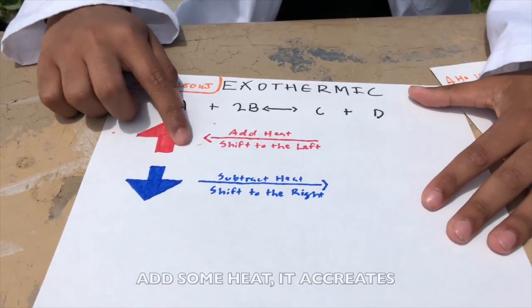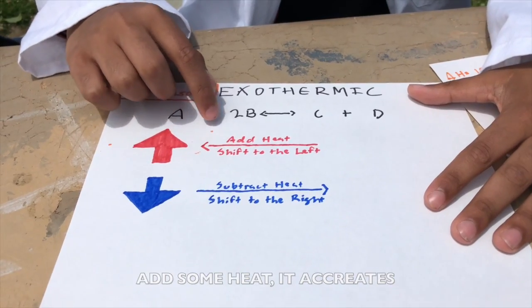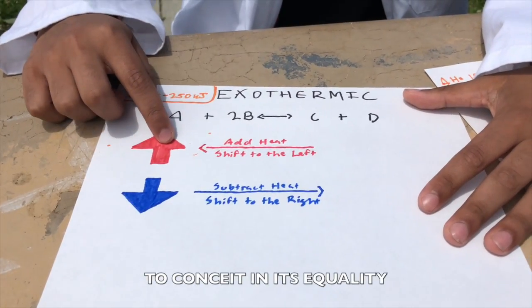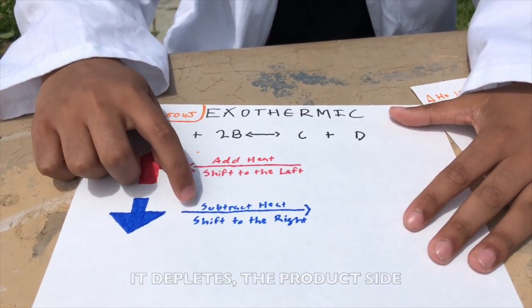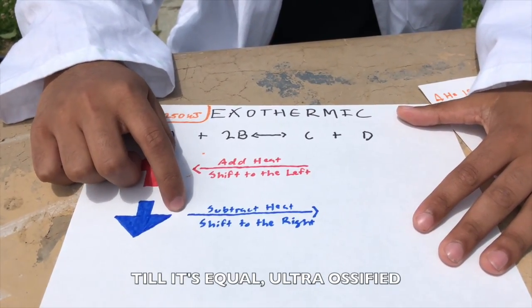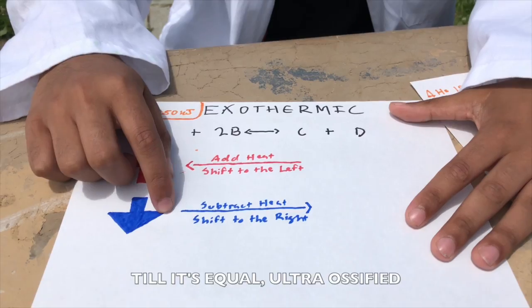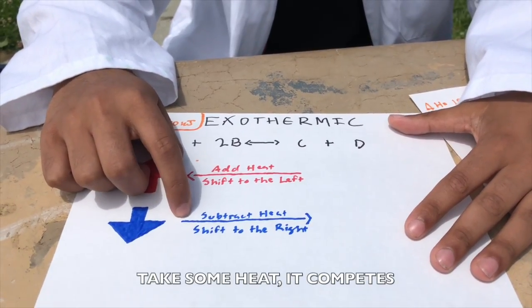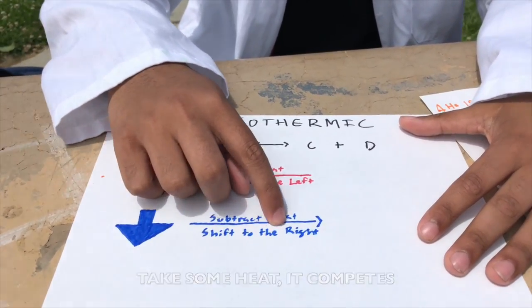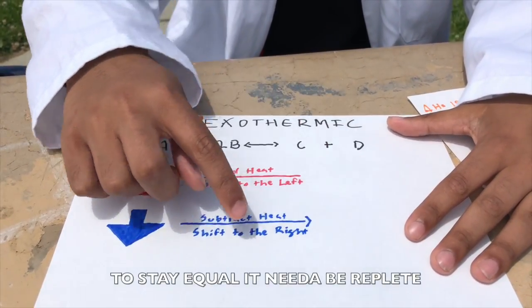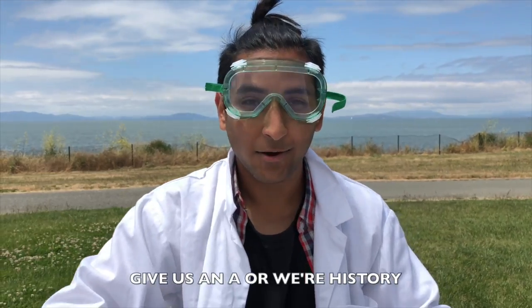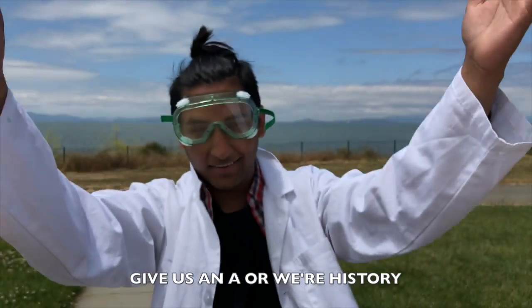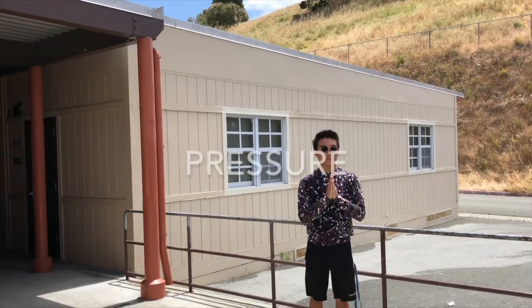Add some heat, it accretes — it took heat on the product side. Take some heat, it competes, stays equal — it needs to reach equilibrium. Le Chatelier chemistry — give us an A in chemistry history!